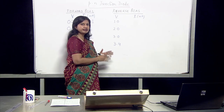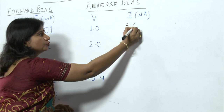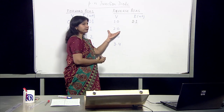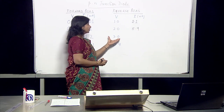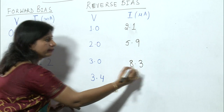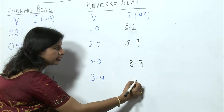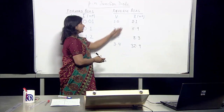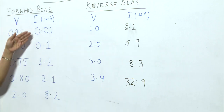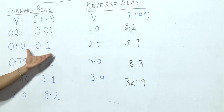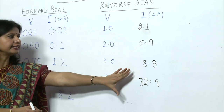Let's plot the readings in reverse bias. Corresponding to 1 volt, the current is 2.1 microamperes. Corresponding to 2 volts, the value is 5.9 microamperes. Corresponding to 3 volts, the value raises to 8.3 microamperes. Corresponding to 3.4 volts, the value raises to 32.9 microamperes. This rise is in microamperes compared to the previous forward bias case where values were rising in milliamperes. A milliampere is 10 to the power 3 times more than a microampere, which means this rise in current is negligibly small.